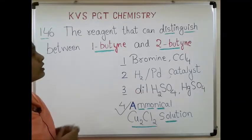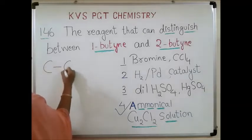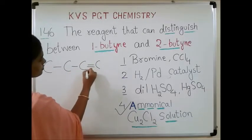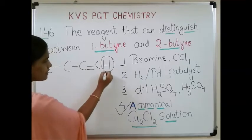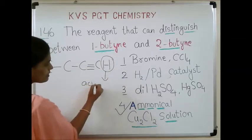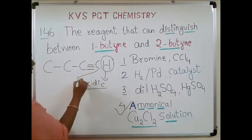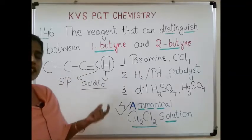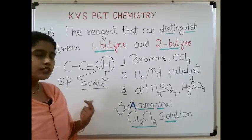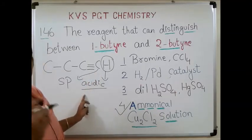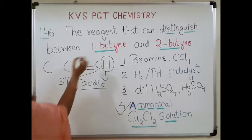What is the basic difference between 1-butyne and 2-butyne? When I speak about 1-butyne, there is a presence of an acidic hydrogen atom. This is basically an acidic hydrogen atom because it is connected to an SP-hybridized carbon atom. The SP-hybridized carbon atom is the most electronegative carbon atom because it has s-character. So it has the presence of one acidic hydrogen atom. On addition of the ammoniacal cuprous chloride solution, 1-butyne will get precipitated out.